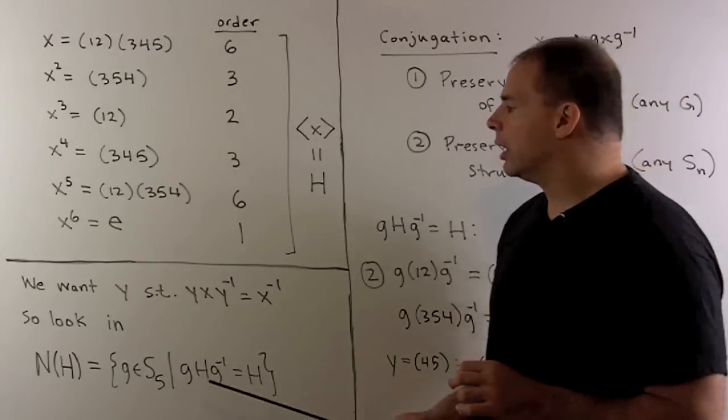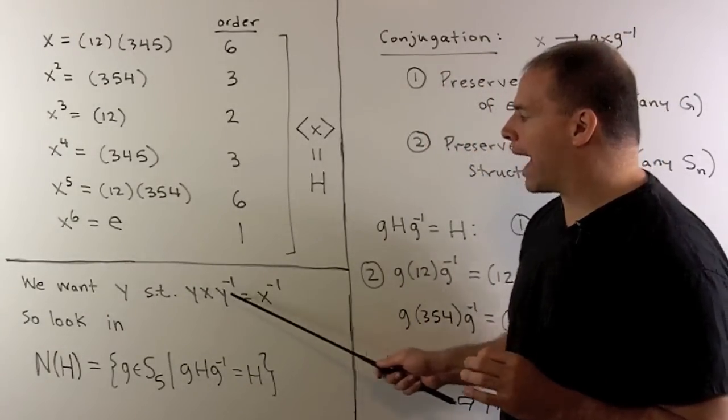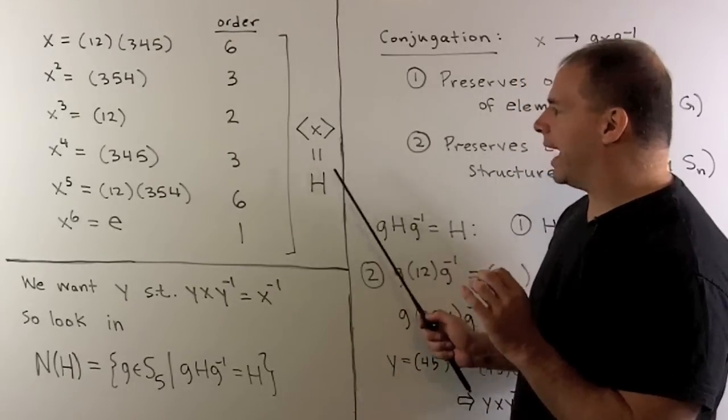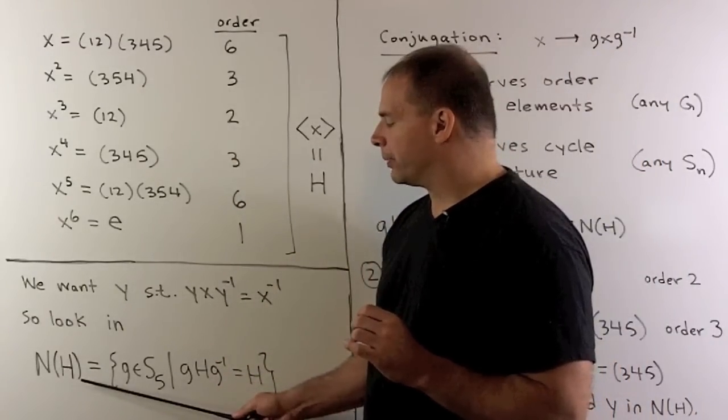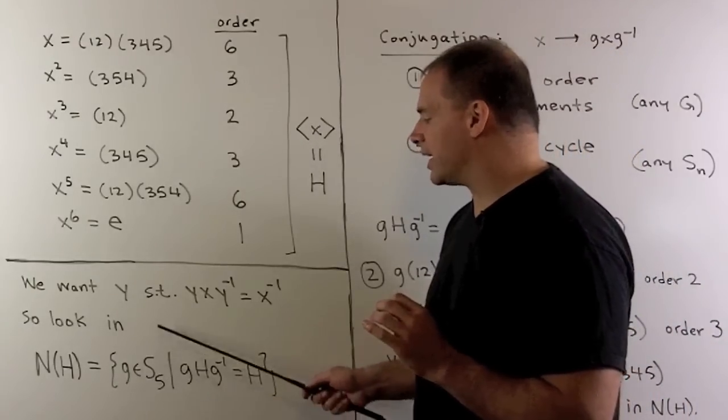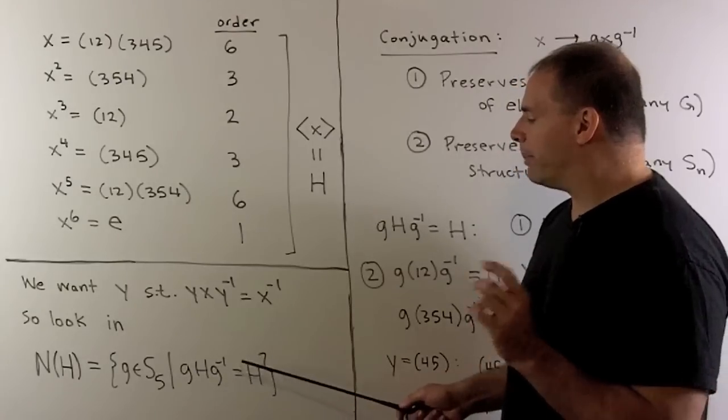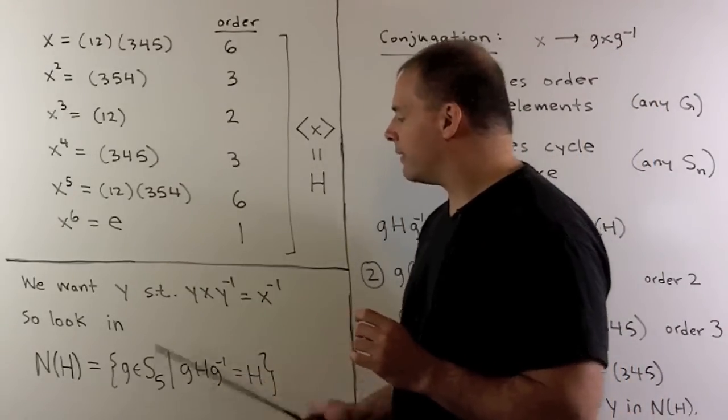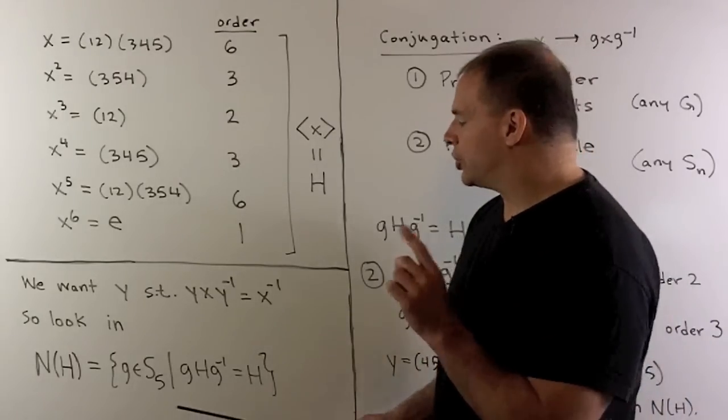For our next step, we're looking for an element Y of order two in S5 such that if we conjugate X by Y, we get YXY inverse equal to X inverse. Because every element of H is a power of X, that means Y is going to be in the normalizer of H. Recall, the normalizer of H is given as the set of all elements in S5 such that if we fix one of these elements, I conjugate our subgroup H by that element. If we get back our subgroup H, it turns out that the normalizer of H is also a subgroup of S5.